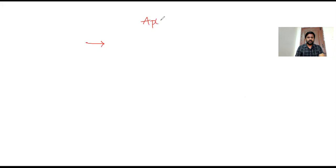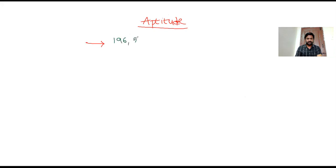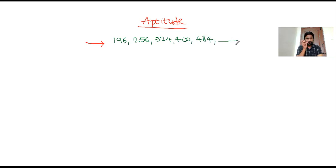Hello everyone, myself Pavan Ready, aptitude trainer. I'm explaining what aptitude is. For example, given a group of numbers like 196, 256, 324, 400, 484, dash — a group of numbers followed by a certain property — we have to find that property and find the next number.